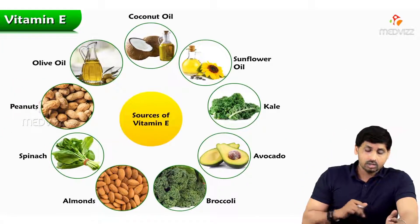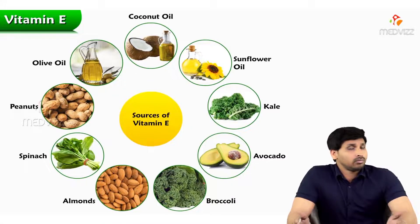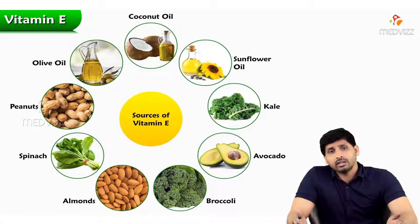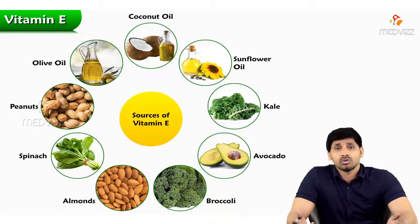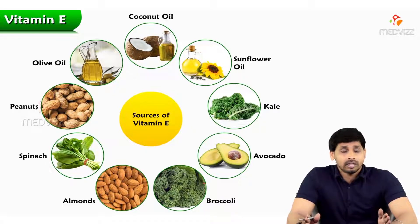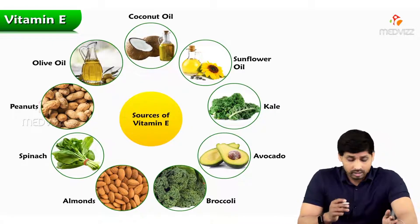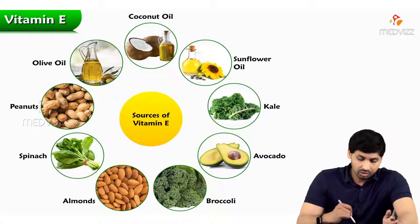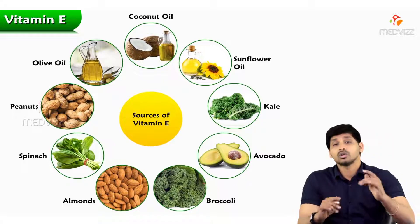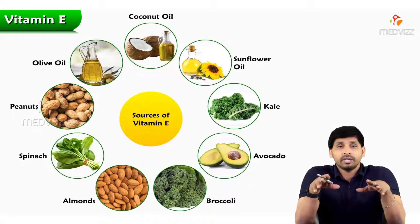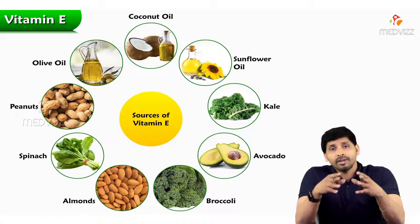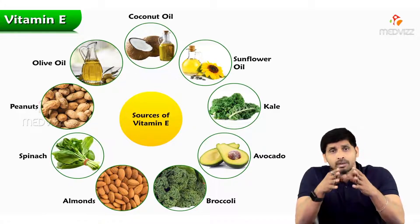Coming to the sources: Vitamin E is mainly present in vegetable oils such as coconut oil, sunflower oil, and olive oil, which are rich sources. Apart from that, peanuts, spinach, almonds, broccoli, avocado, and kale are other good sources of Vitamin E. If you want more Vitamin E, you should include these foods regularly in the required amounts.